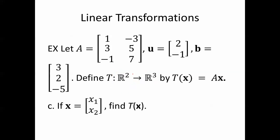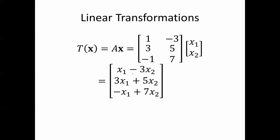If x is [x1, x2], find T(x). We can do that one easily enough. T(x) is going to be Ax. So when you multiply this together, you end up with [x1 - 3x2, 3x1 + 5x2, -x1 + 7x2].